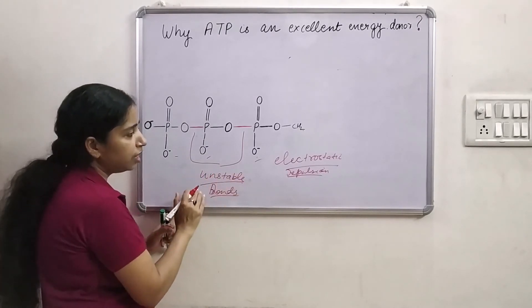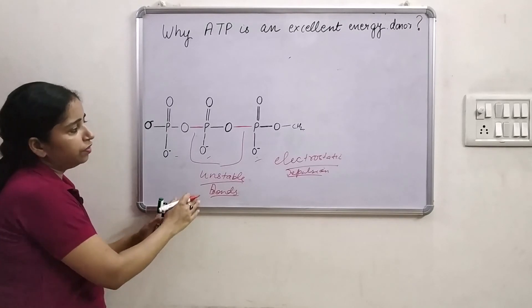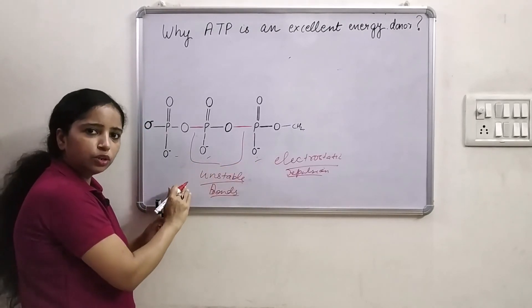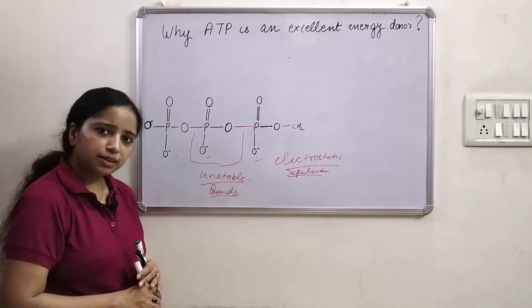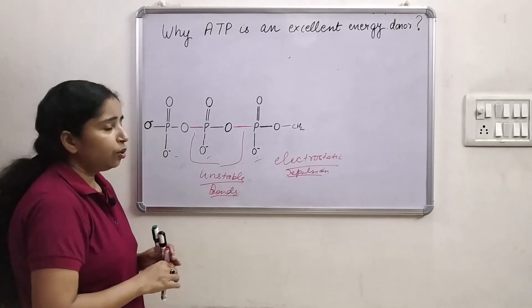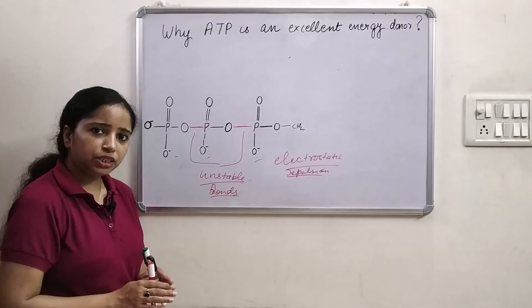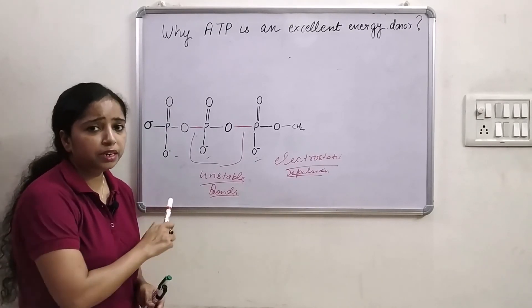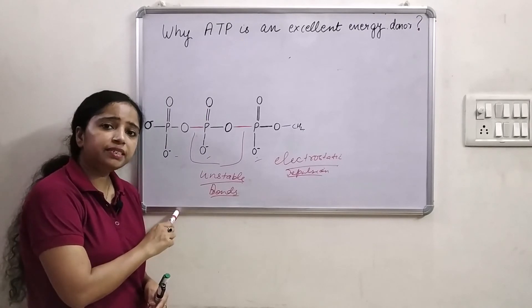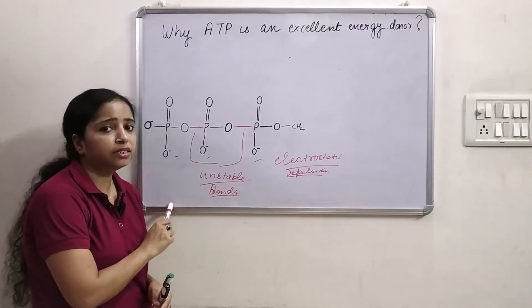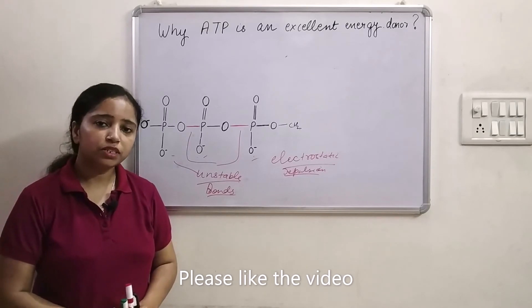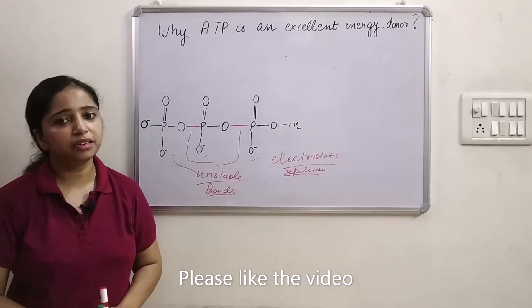So these phosphoanhydride bonds are unstable because of the electrostatic repulsion between the phosphate groups. As these bonds are unstable, they require low activation energy and they can be easily broken. So the instability of these bonds makes ATP an excellent energy donor. Due to the instability of these bonds ATP is an excellent energy donor.